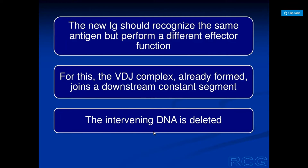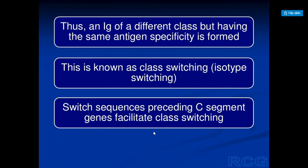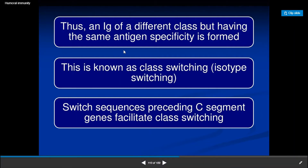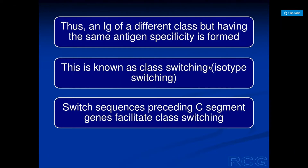For class switching, the VDJ complex already formed joins a downstream constant segment and the intervening DNA is deleted out. Another form of the antibody is generated through this class switching. Thus, an immunoglobulin of a different class but having the same antigen specificity is formed. This is known as class switching, also called isotype switching.